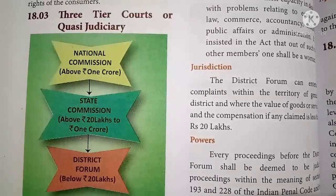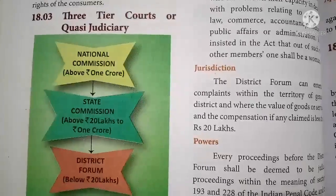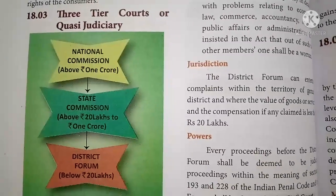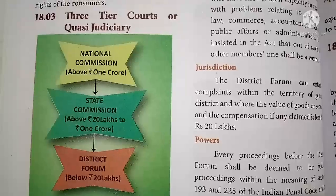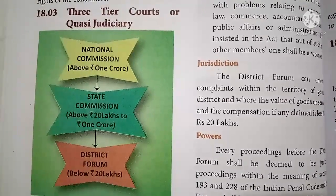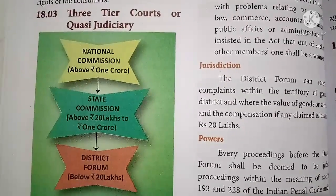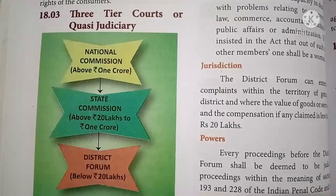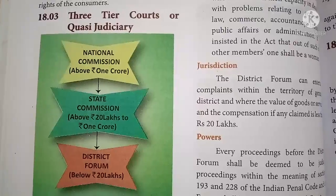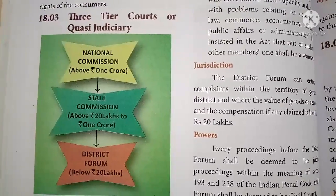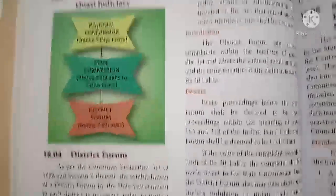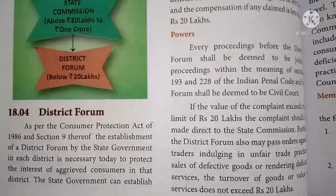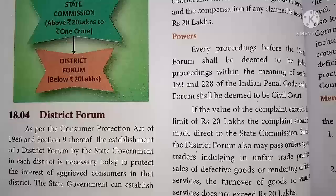The state level commission accepts complaints above 20 lakhs but below one crore. The district forum is established to collect complaints from consumers below 20 lakhs. In these three-tier quasi-judiciary courts, the government will protect the consumer and create grievance awareness while consuming the product.